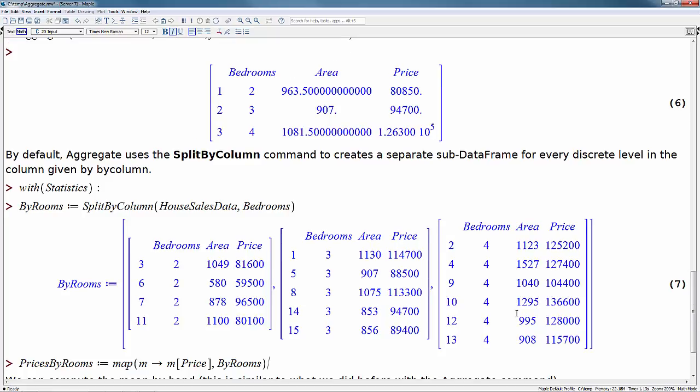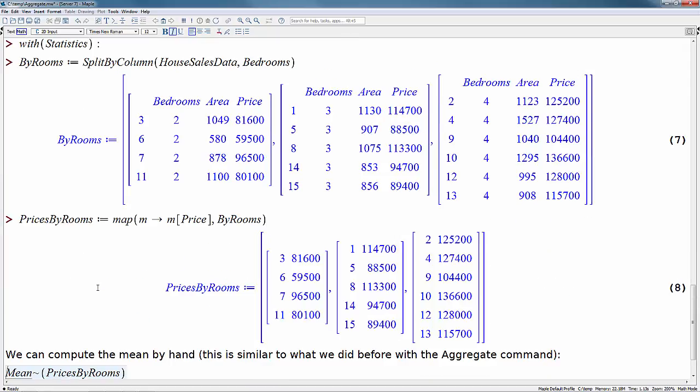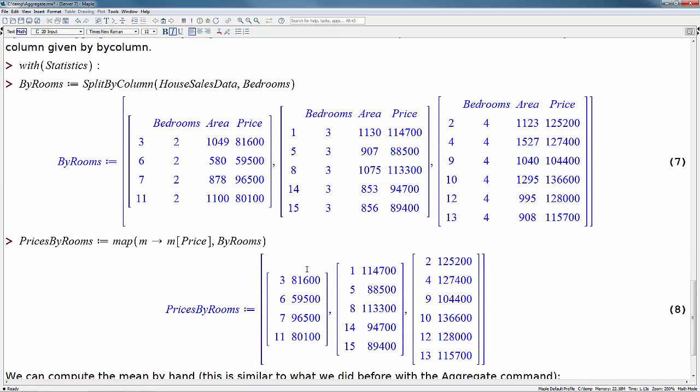Now next, I'm going to plot this. But first, I'm just going to show you very quickly how we can filter out price from these. So I'm just going to map this function into this buy rooms variable that I just created. And we can see now prices by rooms. We've got our sub data frames here for the two, three, and four bedroom apartments respectively.